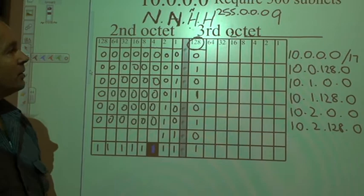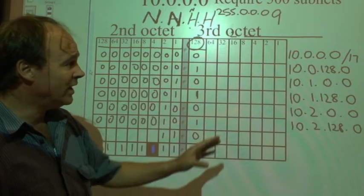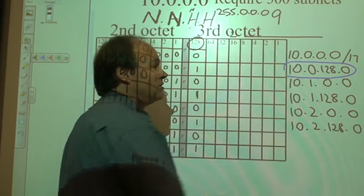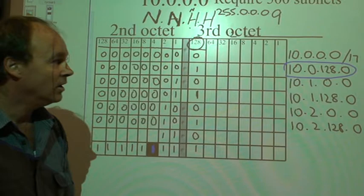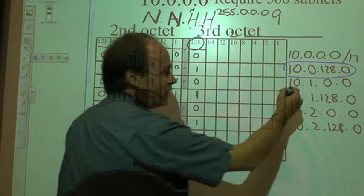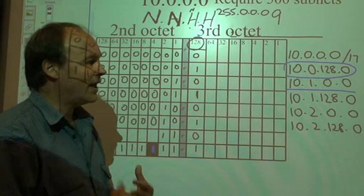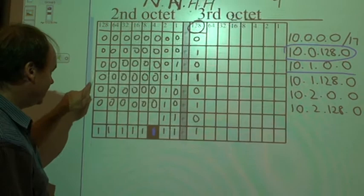So we found our networks using a Class A system, borrowing 9 bits. We have the network pattern as follows. Now if we were to take this network here, the 10.0.128.0 network, we want to know what the address range would be for that network. Note the very next network after that - a little key there on how to work out your address range by noting the next network.